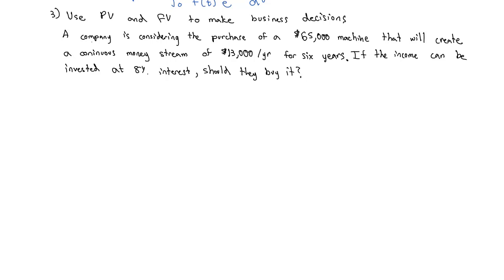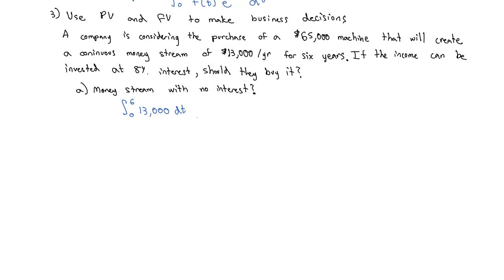To make this decision, we're going to go through several steps. The first step is: what is the money stream with no interest? In other words, will the machine just make enough money to pay for itself? That's a non-interest-bearing money stream — just the integral from zero to six years of the $13,000 it brings in each year over time.